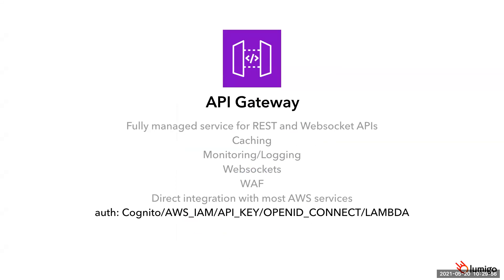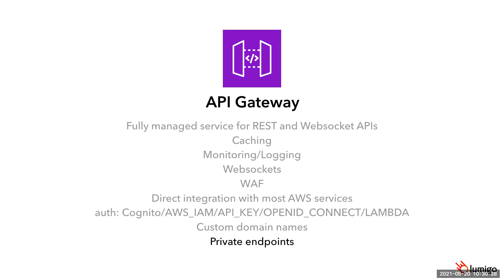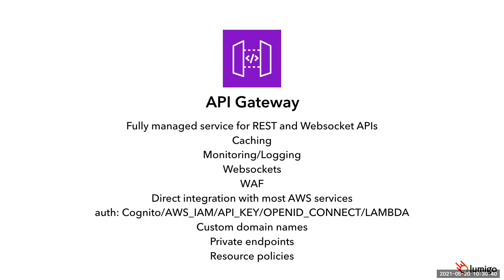API Gateway supports the same authentication options as AppSync plus Lambda authorizers for custom authentication logic, and its API keys support rate limiting and quotas through usage plans — useful for SaaS applications needing per-client request limits. API Gateway also supports custom domains and private VPC-only endpoints, which AppSync doesn't support natively. API Gateway also supports resource policies, which AppSync doesn't have. Overall, API Gateway has a broader feature set than AppSync.